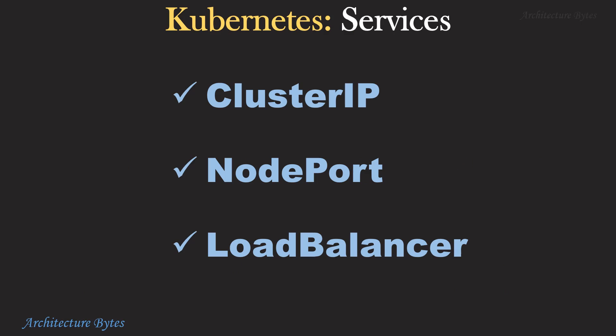There are three main types of Kubernetes services: ClusterIP, NodePort and LoadBalancer. Let's look at each of them one by one.